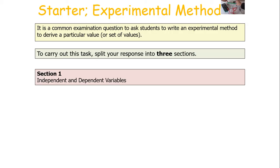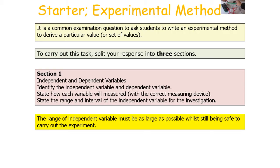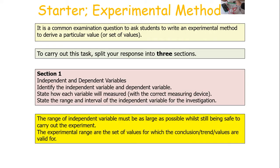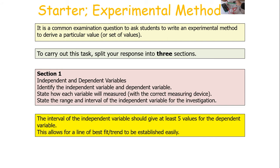Section one: independent and dependent variables. In this section, you identify your independent variable and your dependent variable, you state how each variable will be measured with the correct measuring device, and you state the range and interval of the independent variable for your investigation. It's important to note that the range of the independent variable must be as large as possible while still being safe to carry out the experiment, because the experimental range is the set of values for which the conclusion, trend, or value calculated is valid. The interval of the independent variable should give at least five values for the dependent variable, because this allows for your line of best fit or trend or constant to be established easily.